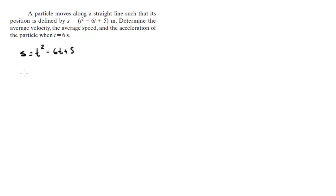So the first thing we got to do is find an equation for the velocity. v equals the derivative of the position with respect to time, ds/dt. So when you derivate this, you get that this is equal to 2t minus 6.